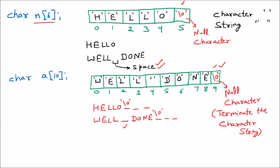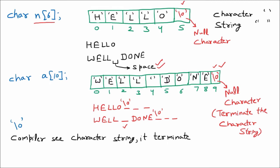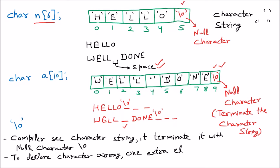One very important thing about '\0': when the compiler sees a character string — meaning any number of characters — it terminates it with the null character. The null character is '\0', so every string we use inside C programming will end with the null character. That is compulsory. Also, to declare a character array, one extra element space is required for the null terminator. The null terminator and null character are the same thing — that is the extra space for '\0'.